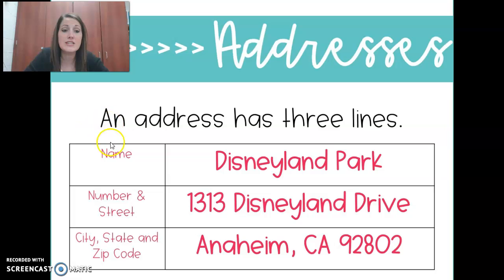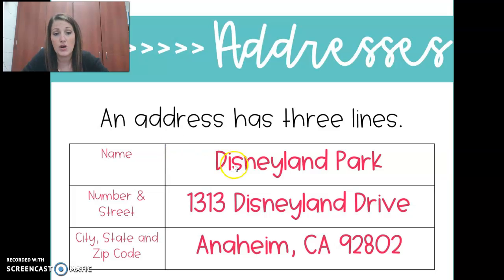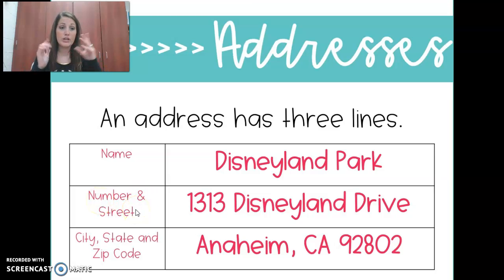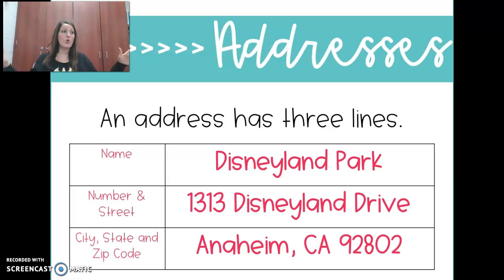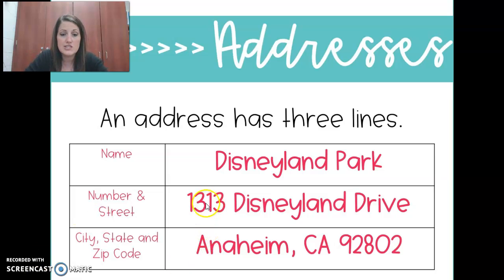An address has three lines. The first line is going to be the name of the person or the company that you're sending it to. In this case, they're sending it to Disneyland Park, so that's the name of the company. Then you put the number and the street. If you look at your house, there's going to be a house number on it. You put the number that goes to that building and then the street that they live on — you'll see a sign that says the name of your street. So this is 1313, and the street's name is Disneyland Drive.